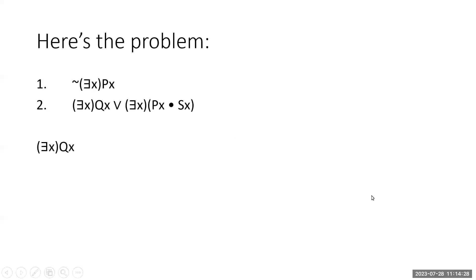So here's the problem that we are given. Premise one says nothing is P. Premise two says either something is Q or something is both P and S. And then the conclusion we're supposed to get to is something is Q.